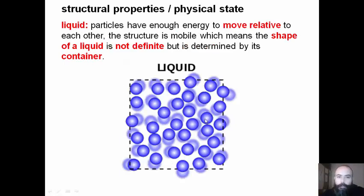In liquid building products, particles have enough energy to move relative to each other. The structure is mobile, which means the shape of a liquid is not definite but is determined by its container.